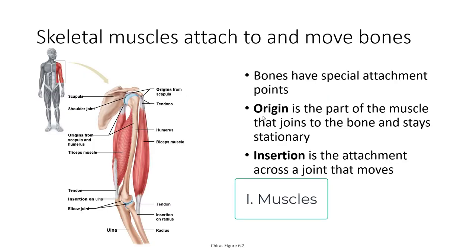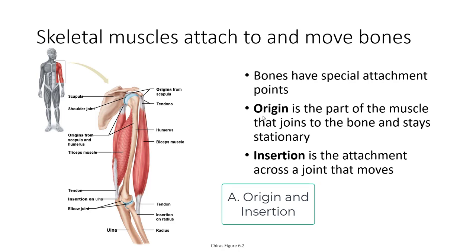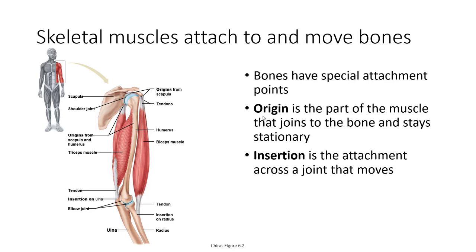Skeletal muscles are what we're going to be looking at in this lecture. Cardiac muscles were more of the circulatory system and smooth muscles were more of the digestive system, but this is the skeletal muscles. Bones are attached to the muscles and there are two attachment points: the origin and the insertion. The origin is the part of the muscle that joins the bone and stays stationary — for the biceps, that's on the scapula. The insertion is the attachment across the joint that moves, so the insertion is on the radius across the elbow joint.